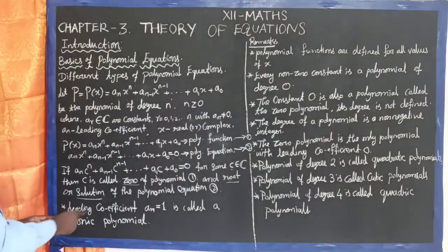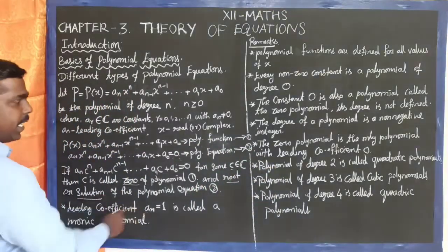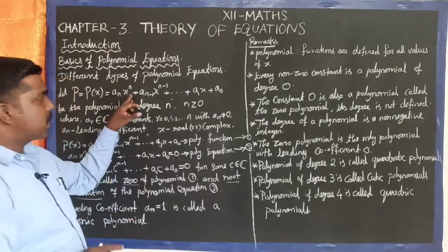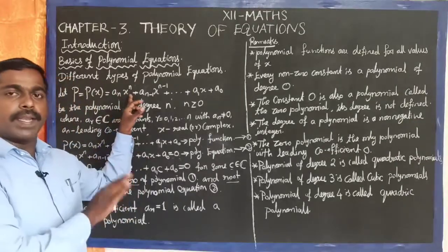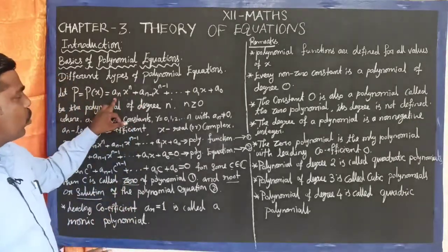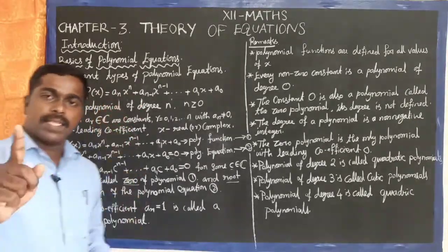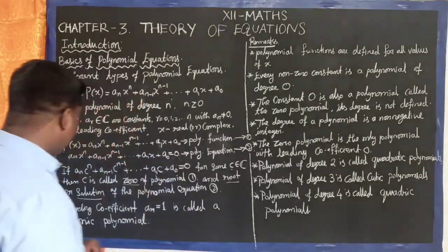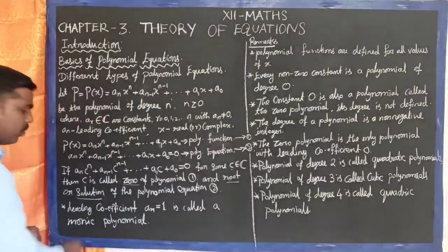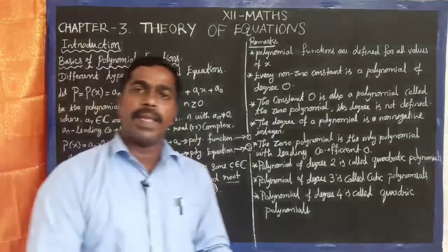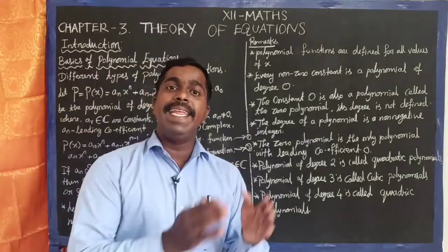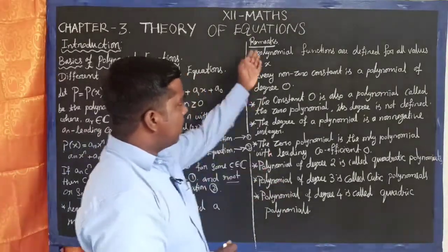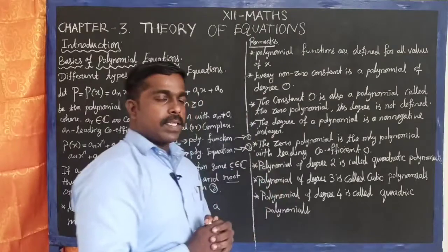If the leading coefficient aₙ is 1, i.e., the polynomial has the form xⁿ + ..., then it is called a monic polynomial. A monic polynomial is one whose leading coefficient is 1.